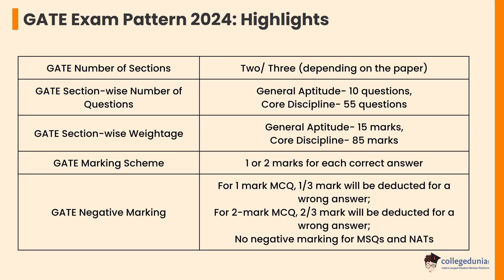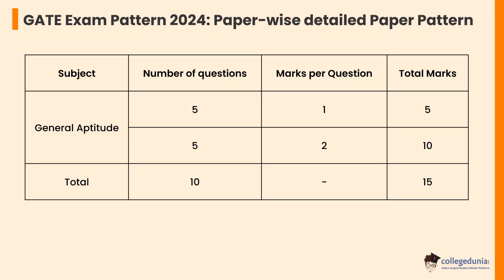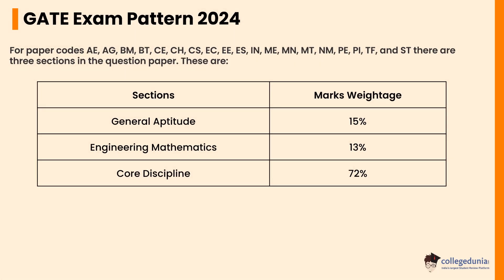Let's check the GATE paper-wise detail pattern. General Aptitude is a common section in all GATE papers, comprising 15 percent of the total marks. The questions in General Aptitude are based on verbal, numerical, and quantitative ability. There are a total of 10 questions, with five questions carrying one mark each and five questions carrying two marks each.